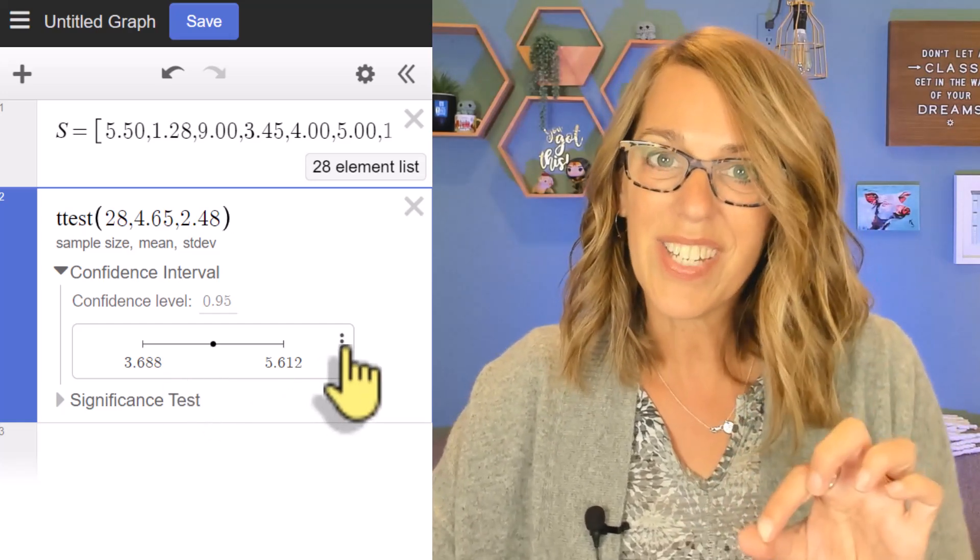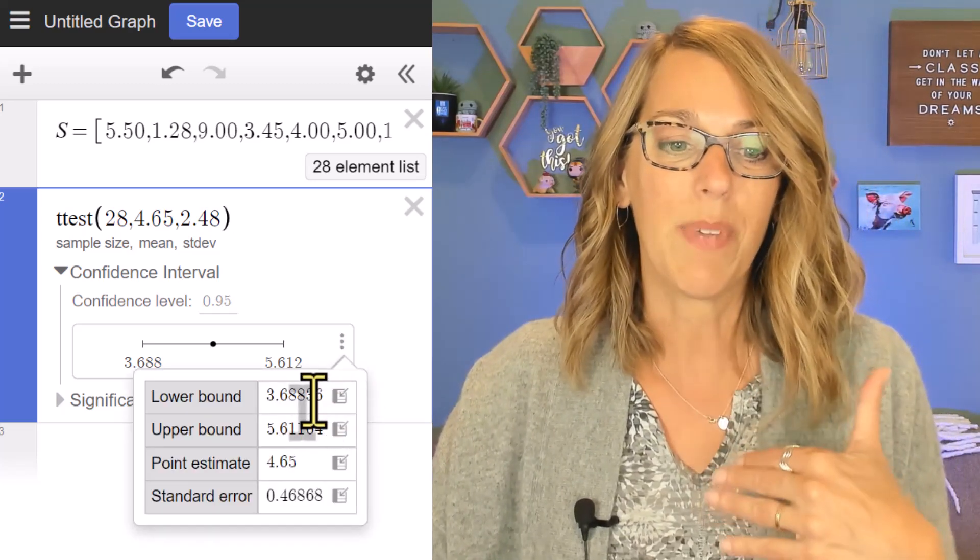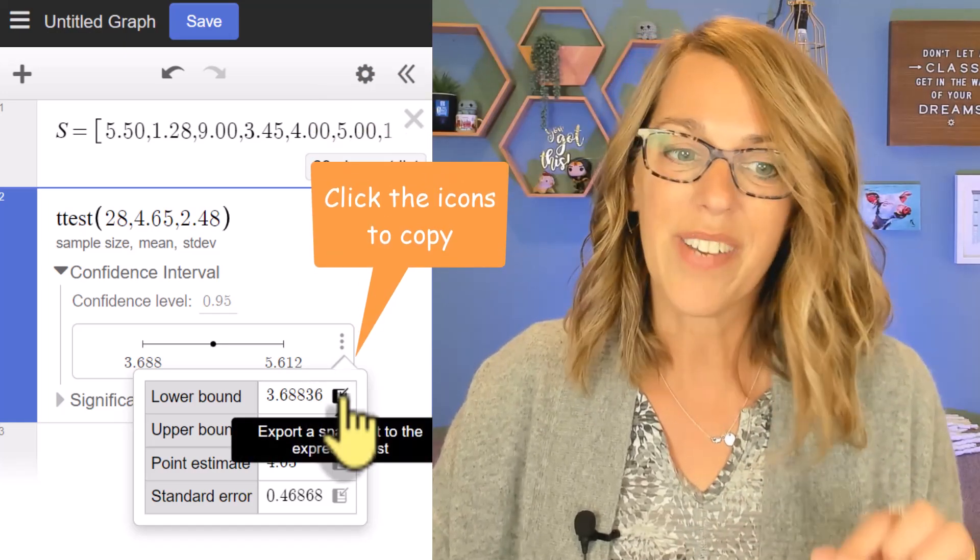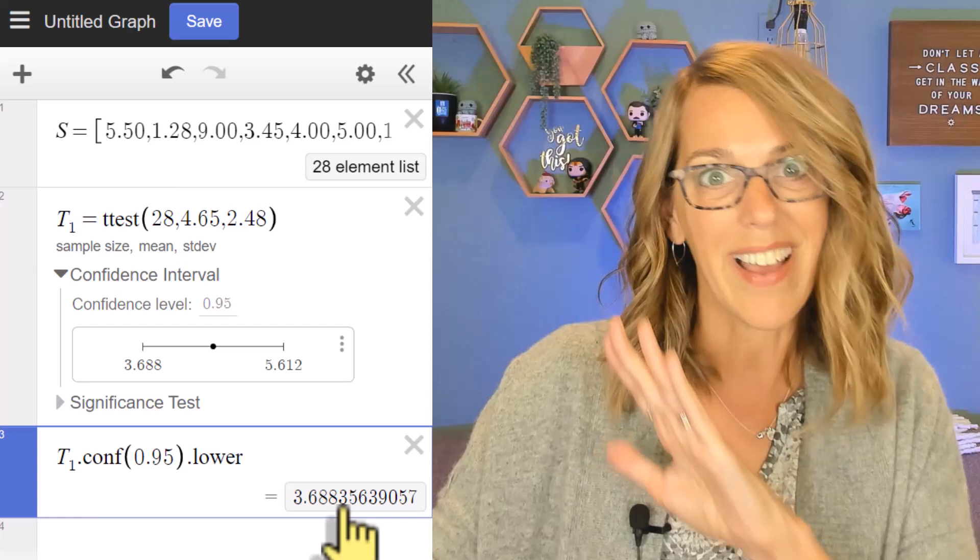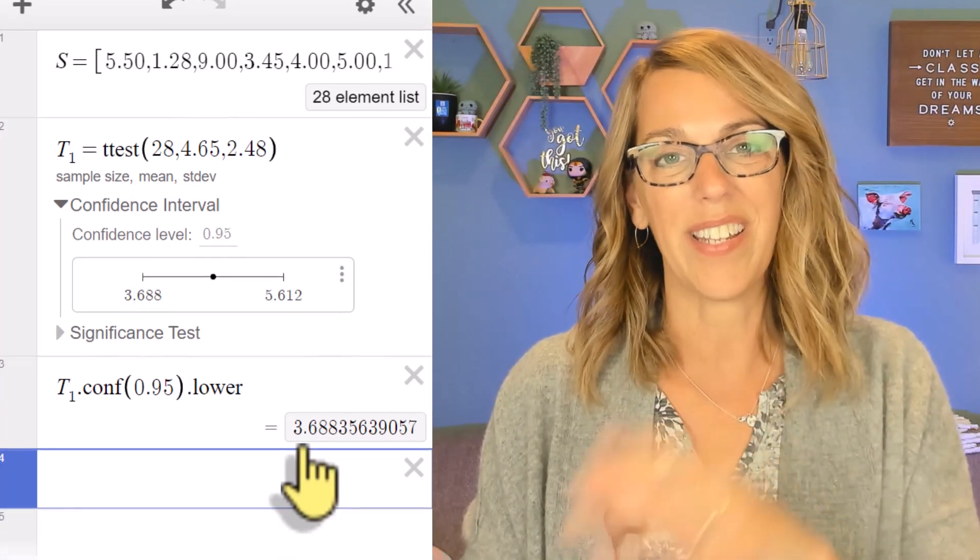I can get to these values and work with them more by clicking the three dots and that gives me additional decimal places. I can also copy them down into one of my empty cells and it gives me tons of decimal places. If I wanted to also find that margin of error,